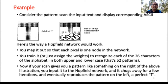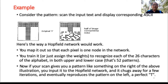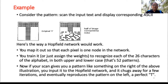Let us explain this with a very simple example. Consider a pattern — we will scan an input text and display the corresponding ASCII value. The original pattern is the alphabet T. The image on the right side is not very clear because of some kind of noise, so the image is corrupted. How does the Hopfield network work here?